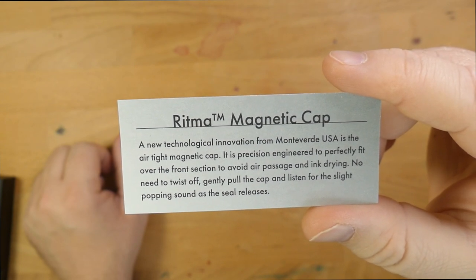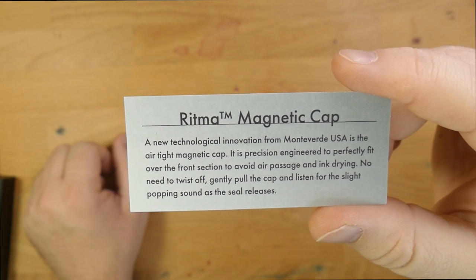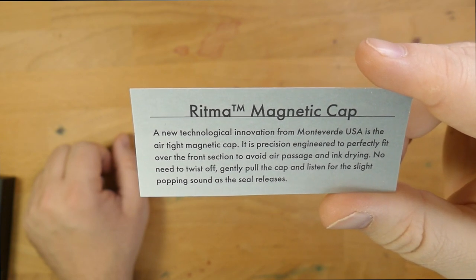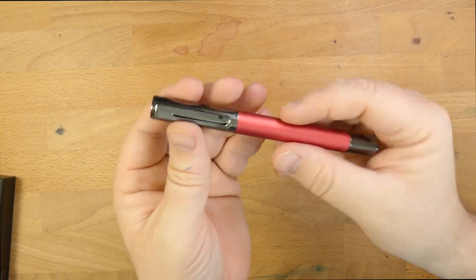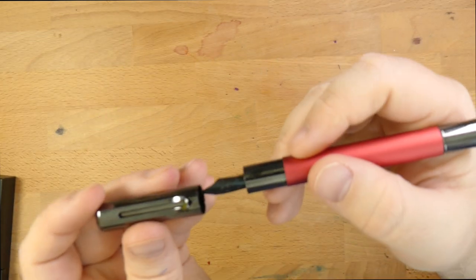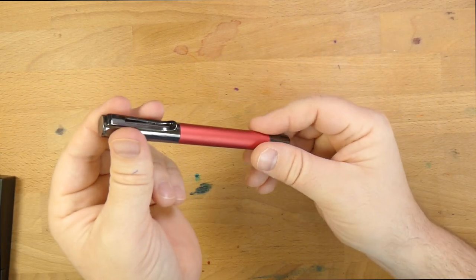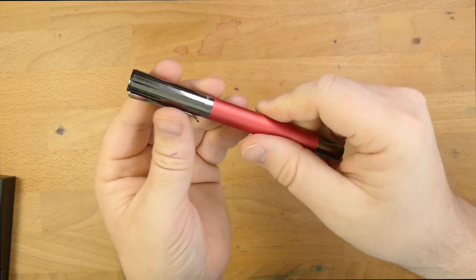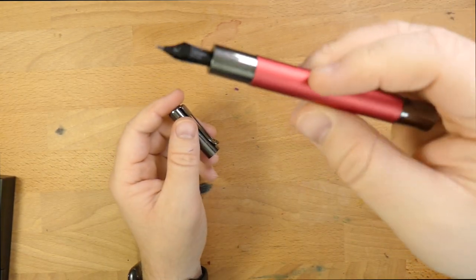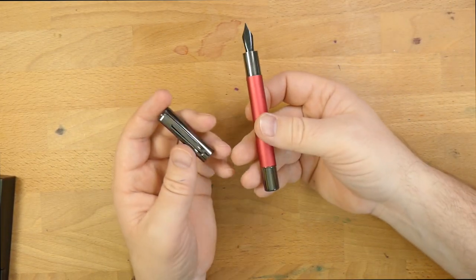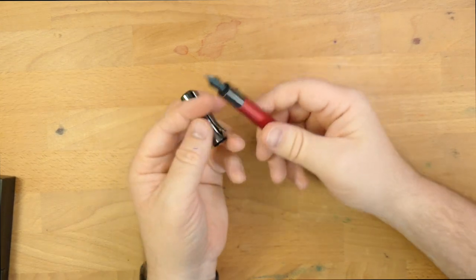It says it's precision engineered to perfectly fit over the front section to avoid air passage and ink drying. No need to twist off. Gently pull the cap and listen for the slight popping sound. Well, let's listen to a popping sound. You all hear that? It's awesome. There is definitely a popping sound when you pull this cap off. It does not come off easily. I have no problem hanging this from a shirt pocket because this cap is very secure. It pops when you bring it off.